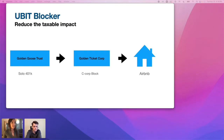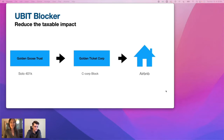Here's a C-corp block example: Golden Goose has invested funds into their C-corp called Golden Ticket Corp, and then that corp buys the Airbnb. It seems simple, but remember you'll absolutely need your CPA involved because there are tax returns required.